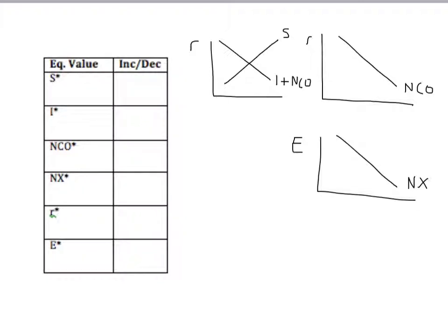We can draw in our initial equilibrium interest rate, bring that over to find the initial level of net capital outflow, and then bring that down, draw in supply, and find the initial equilibrium real exchange rate. Now we're going to shift the NCO curve in, and we're going to shift the I plus NCO curve in.